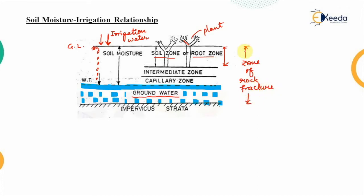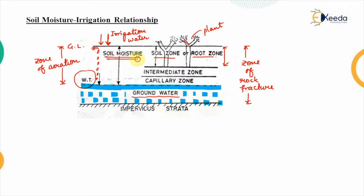The zone of rock fracture has a certain part occupied by groundwater up to the water table level. The portion of the zone above the water table has no water — only air is present. Such a zone is known as the zone of aeration, in which the soil will be moistened by water percolating through the ground and reaching the groundwater level, moisturizing the soil in between.